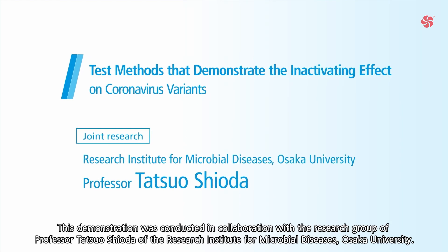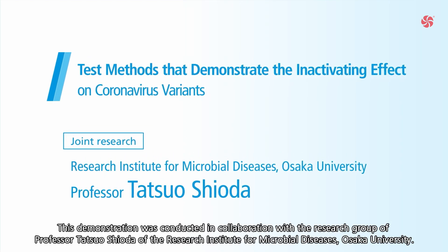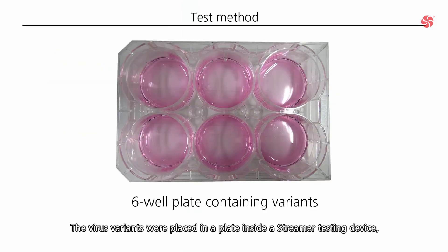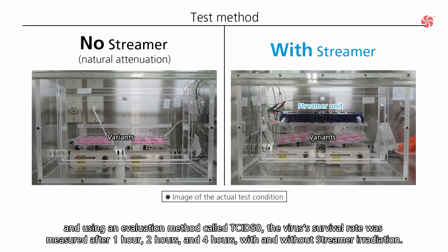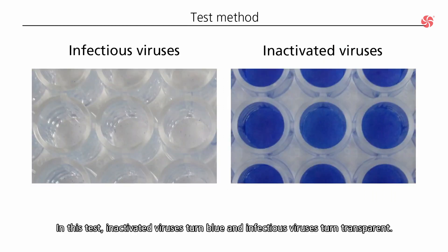This demonstration was conducted in collaboration with the research group of Professor Tatsuo Shioda of the Research Institute for Microbial Diseases, Osaka University. The virus variants were placed in a plate inside a streamer testing device, and using an evaluation method called TCID50, the viruses' survival rate was measured after one hour, two hours, and four hours — with and without streamer irradiation. In this test, inactivated viruses turn blue and infectious viruses turn transparent.